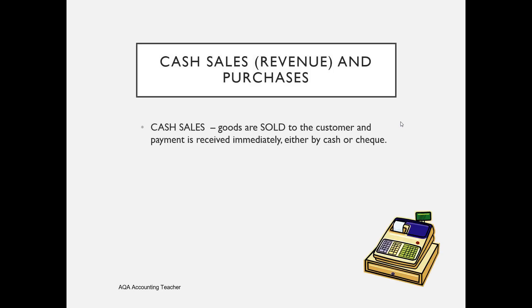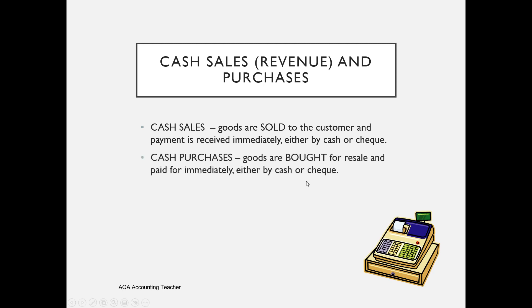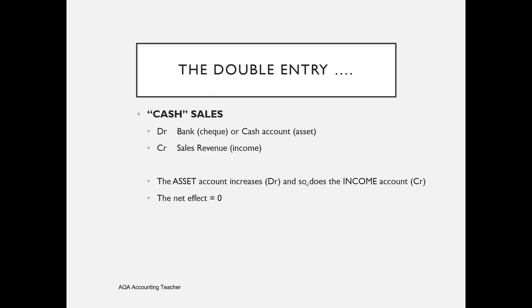A quick recap about cash sales and purchases: when we use the term 'cash' it doesn't necessarily mean cash has changed hands — it could be a transaction through the bank account. It just means that goods are paid for immediately. 'Goods' is a generic term referring to either sales or purchases; we never have a T-account called goods in our system. Cash sales is where goods are sold and payment is received immediately by cash or cheque, and cash purchases is where we buy goods for resale and pay immediately.